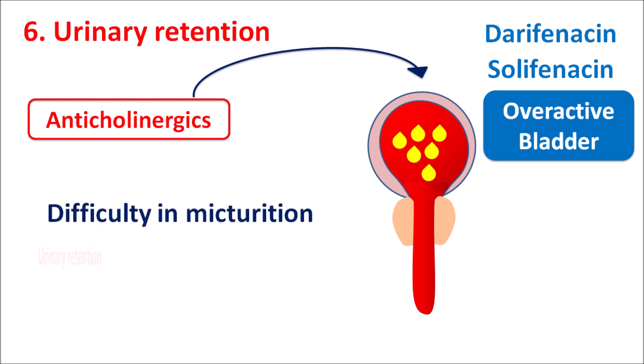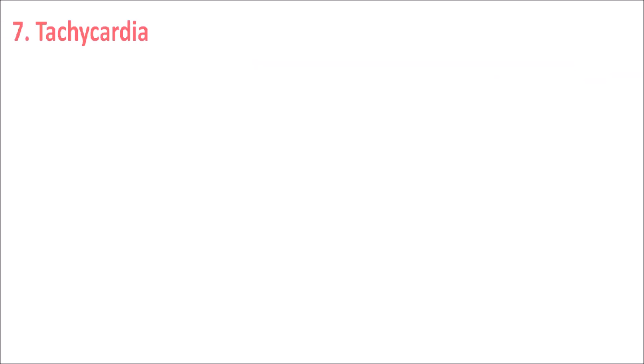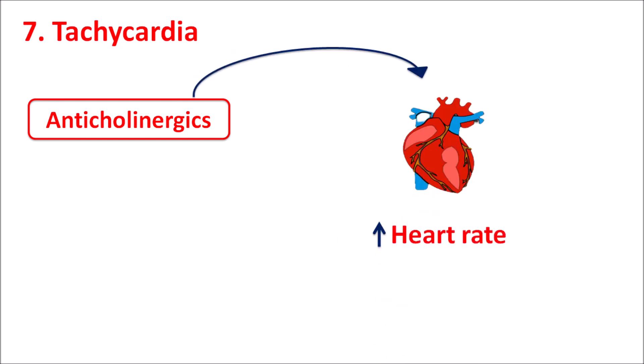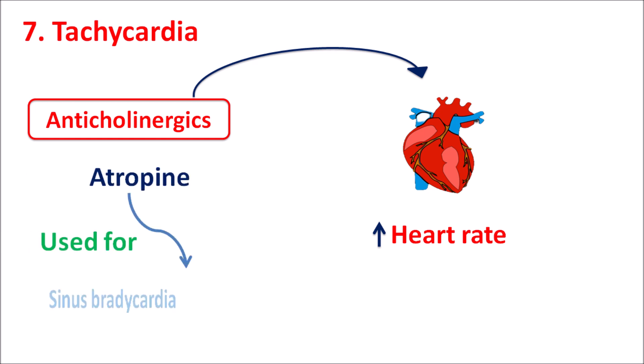The seventh side effect is tachycardia. Since anticholinergics stimulate the heart, they produce an increased heart rate, causing tachycardia. This can also be a clinical indication: atropine is used for the treatment of sinus bradycardia precisely because it produces tachycardia.